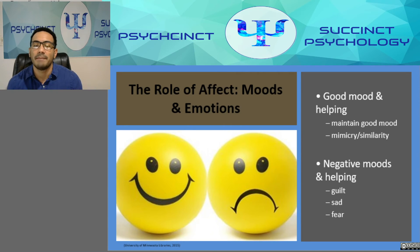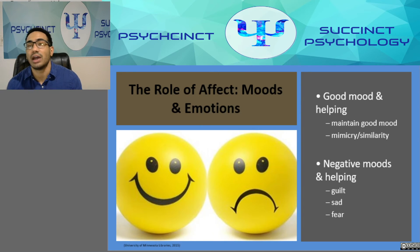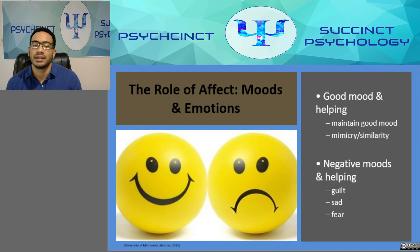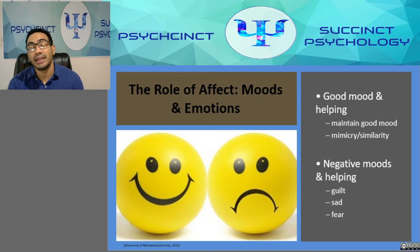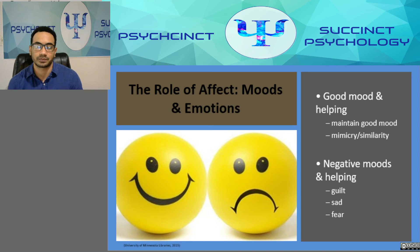Why does being in a good mood make us helpful? There are probably several reasons. First, a positive mood signals that the environment is not dangerous, so we can safely help others. Second, we like other people more when we're in good moods, which may lead us to help them. Finally, and perhaps most importantly, helping makes us feel good about ourselves, thereby maintaining our positive mood. Although positive moods can increase helping, negative emotions can do so as well — if helping can reduce negative feelings, we may help in order to get rid of those bad feelings.